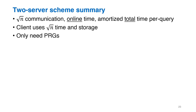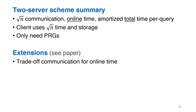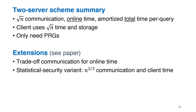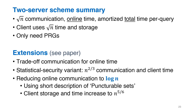To sum up the two-server results: we show a scheme with square root n communication, online time, and even amortized total time per query. The client storage and running time in our scheme is square root n, and the scheme requires either pseudorandom generators or shared randomness between the client and the left server. We also have extensions, such as trading off communication for online time and vice versa, and a statistical security variant that works even when there's no shared randomness. Finally, using puncturable pseudorandom functions, we can have the client send only a short description of a punctured set, which shrinks the communication in the online phase to only log n. The resulting scheme is highly efficient in terms of communication, though the client's running time is not as good.